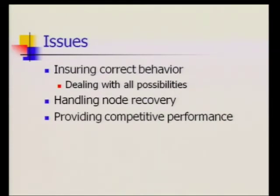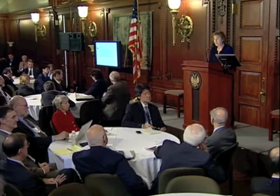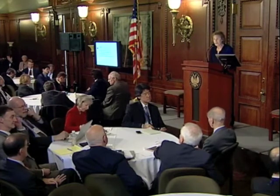We need to handle node recovery — for example, a node that had failed knowing about A but not B needs to get up to date when it comes back. And we have to do all of this in a way that provides competitive performance. Ideally, we'd like performance that approximates that of a single machine — providing the same behavior you'd get from a super reliable single machine while using a bunch of replicas. That's the goal of these protocols.